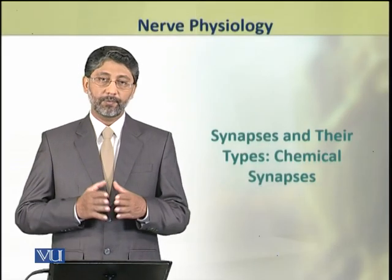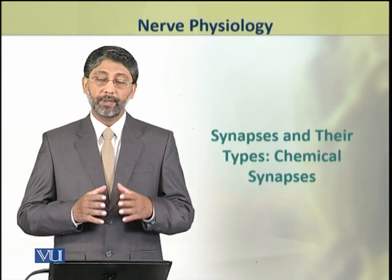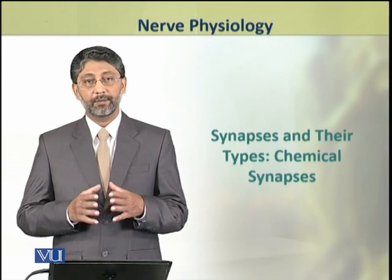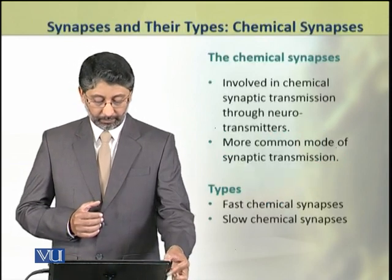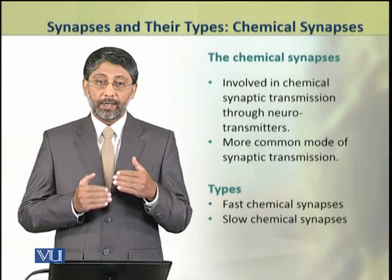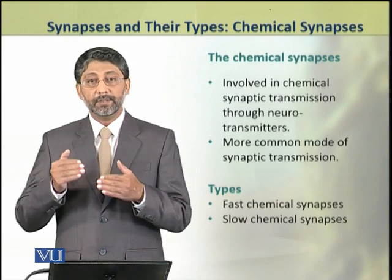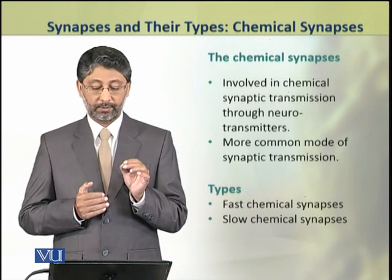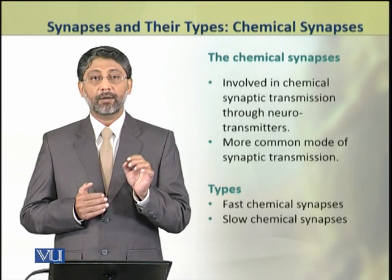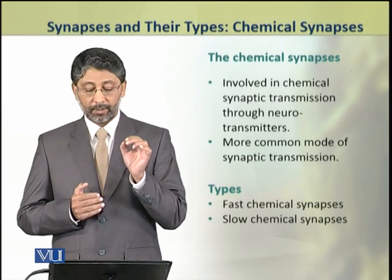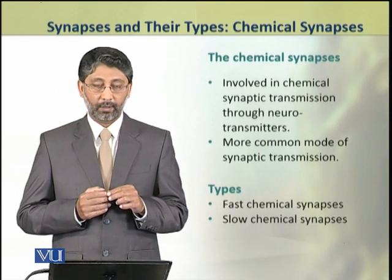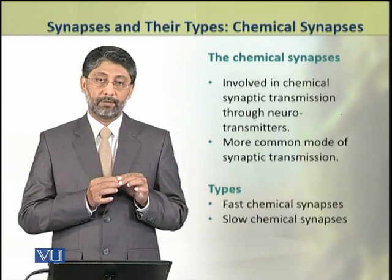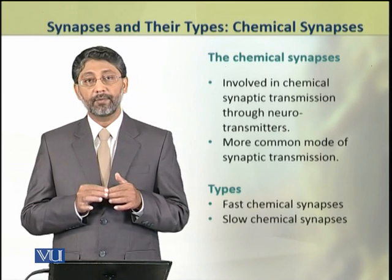In this module we shall discuss in detail the second type of synapses, which are the chemical synapses. Chemical synapses are involved in chemical synaptic transmission through the use of neurotransmitters. They are the most common form of synaptic transmission. There are two types of chemical synapses: fast chemical synapses and slow chemical synapses.